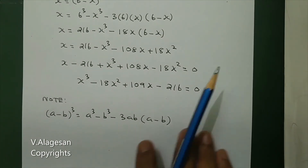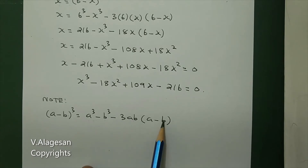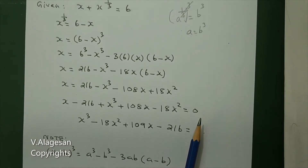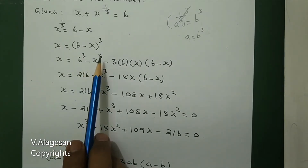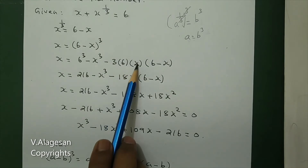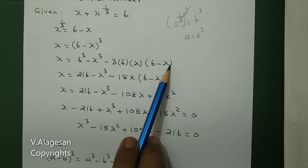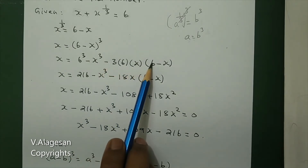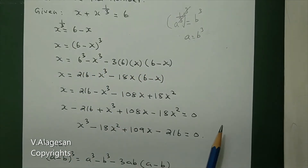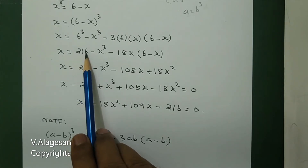Now x to the power one-third is equal to two. And confirming, x to the power one-third is equal to six minus x.